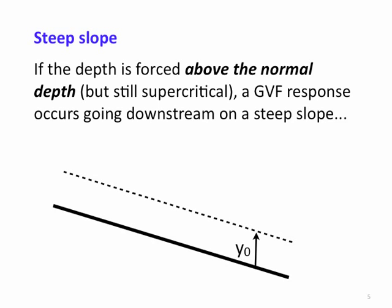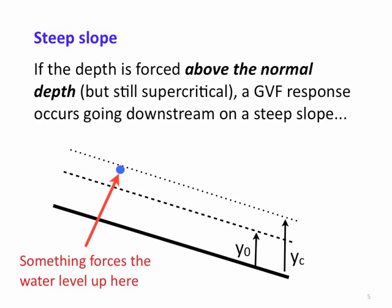Now consider a steep slope again, where y-naught is less than the critical depth. If something forces the water level up above the normal depth but still below the critical depth, there is a gradually varying flow response where the water level going downstream from the perturbation moves back slowly to the normal depth. Again, this is a supercritical response, so the flow adjustment is downstream.